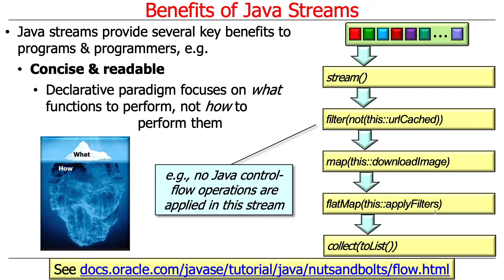Another thing to note about the streams-based approach is there are no Java control flow operations. We don't see if statements, switch statements, while loops, for loops, for-each loops, or do-while loops. We just see a stream, and it's easy to read from top to bottom without having to play compiler and jump back to branches.